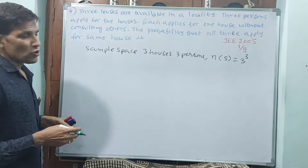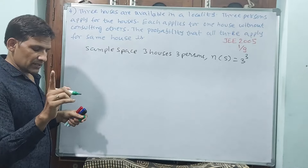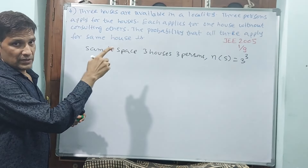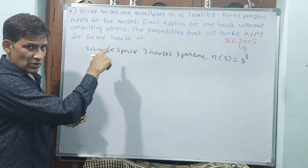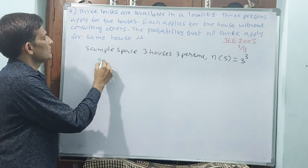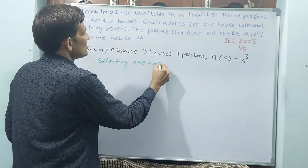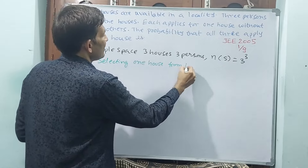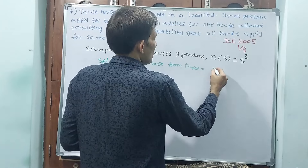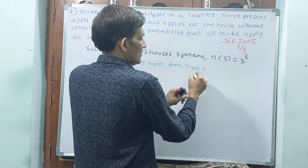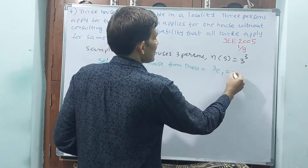What is the numerator? See, one person applies for one house among three houses — selecting one house from three. This is the numerator. See how it is going to come: 3C1, that is equal to 3.